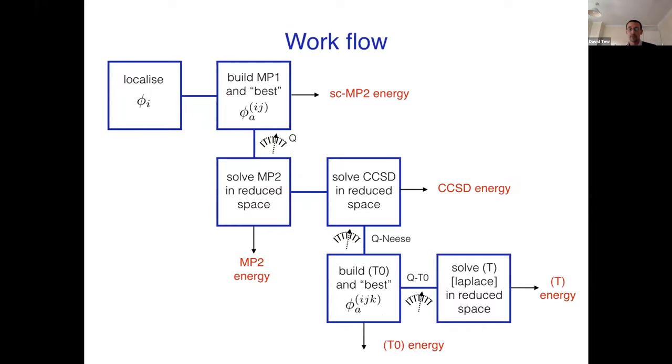So the scheme then for the parentheses T energy is the following. So you do as you did for the CCSD - you merge the doubles spaces to form a triple space using a looser threshold, you build the semi-canonical T2, you get a density from that, and you do a further compression to the step from the semi-canonical triples to the full triples. And we don't do that by solving iterative equations. Instead, we do Laplace transform.